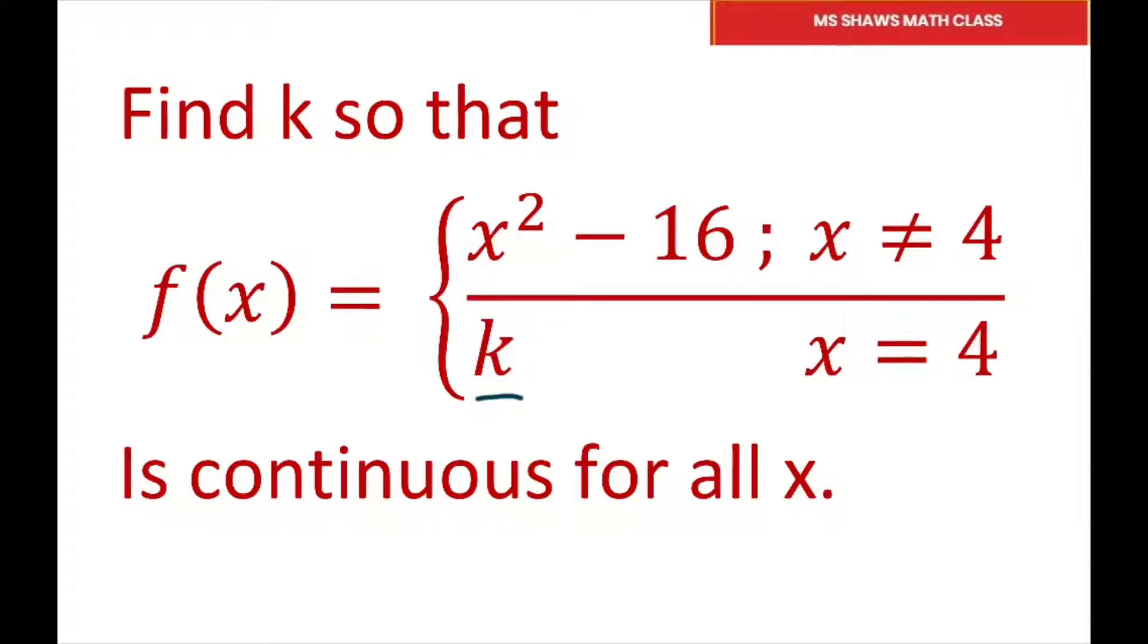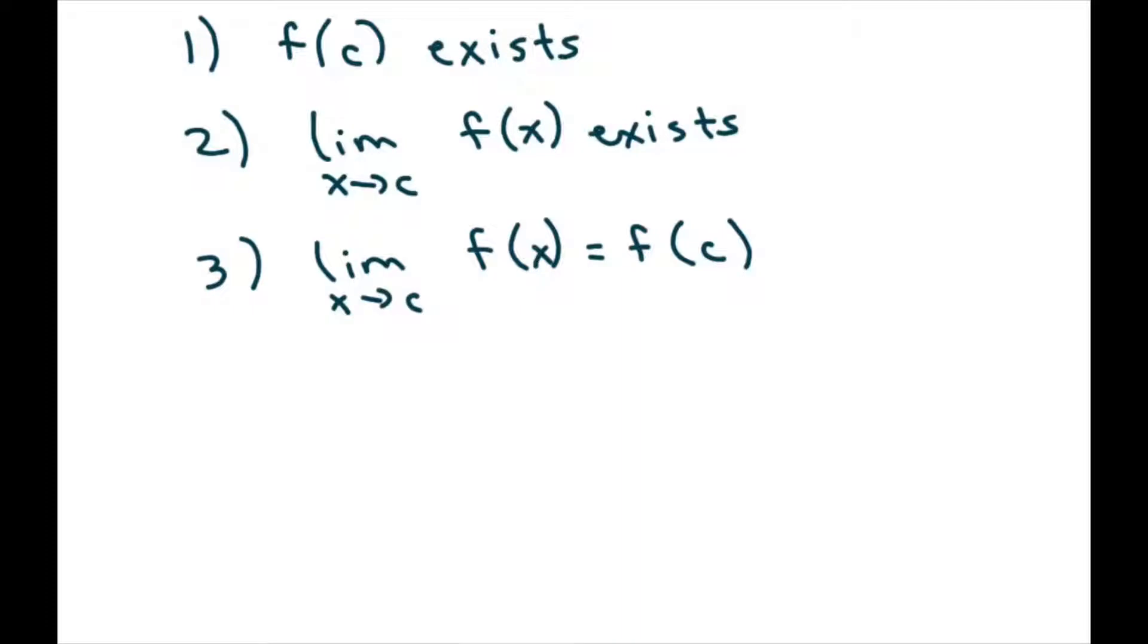So in order for our f to be continuous at a point c, three conditions must be fulfilled. f must exist, and so forth. So let's do condition one and we'll go through this. Let's check for condition one.